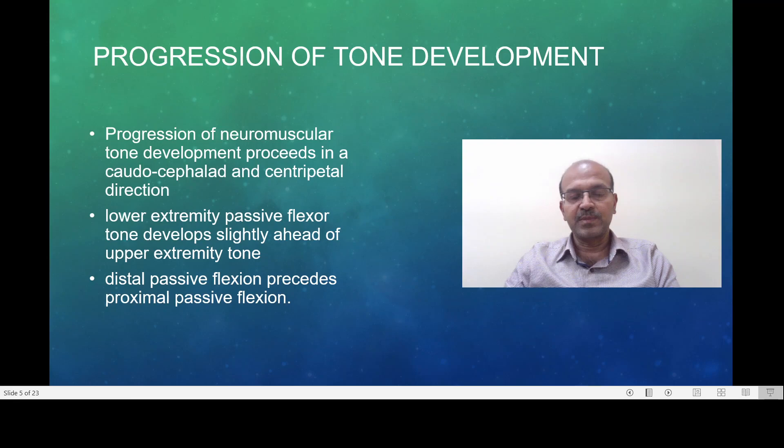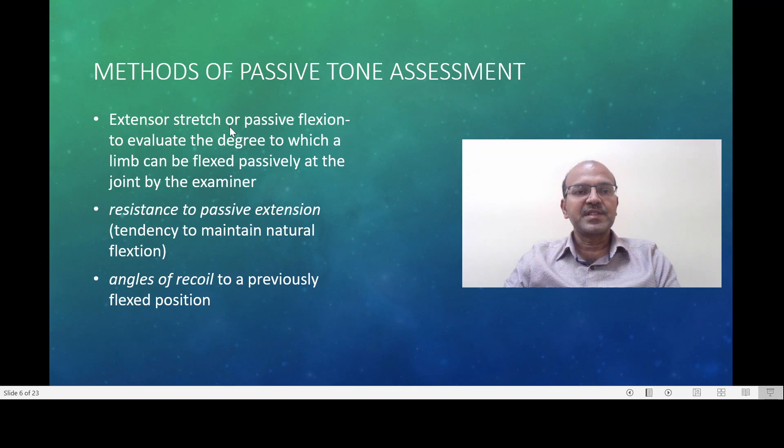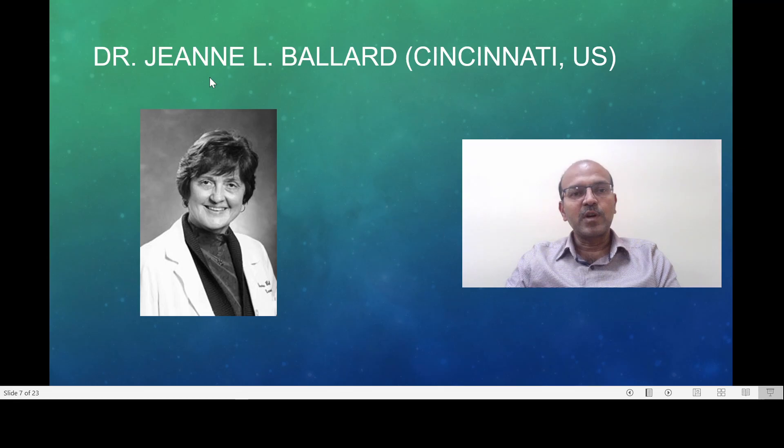So these principles apply as we use the different tests like the popliteal angle, the square window and so on. The passive tone can be assessed using extensor stretch or passive flexion. This evaluates the degree to which the limb can be flexed passively at the joint by the examiner. Then there is resistance to passive extension where there is a tendency to maintain the natural flexion. The arm recoil is an example of that and angles of recoil of a previously flexed position. You try to extend and see how long it stays in that position.